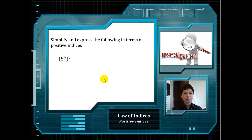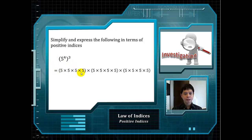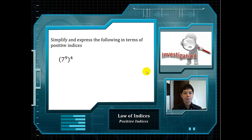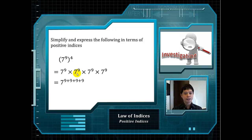Now let's look at another example: 5 to the power of 4 cubed. By rewriting it, we have this. The final answer is 5 to the power of 12, as you can count that there are 12 fives here. Let's look at one more: 7 to the power of 9 to the power of 4. Instead of rewriting all the 7s, we have 7 to the power of 9 multiplied 4 times. Using our very first law of indices, we can rewrite it as 7 to the power of 9 plus 9 plus 9 plus 9, which gives us 7 to the power of 36.